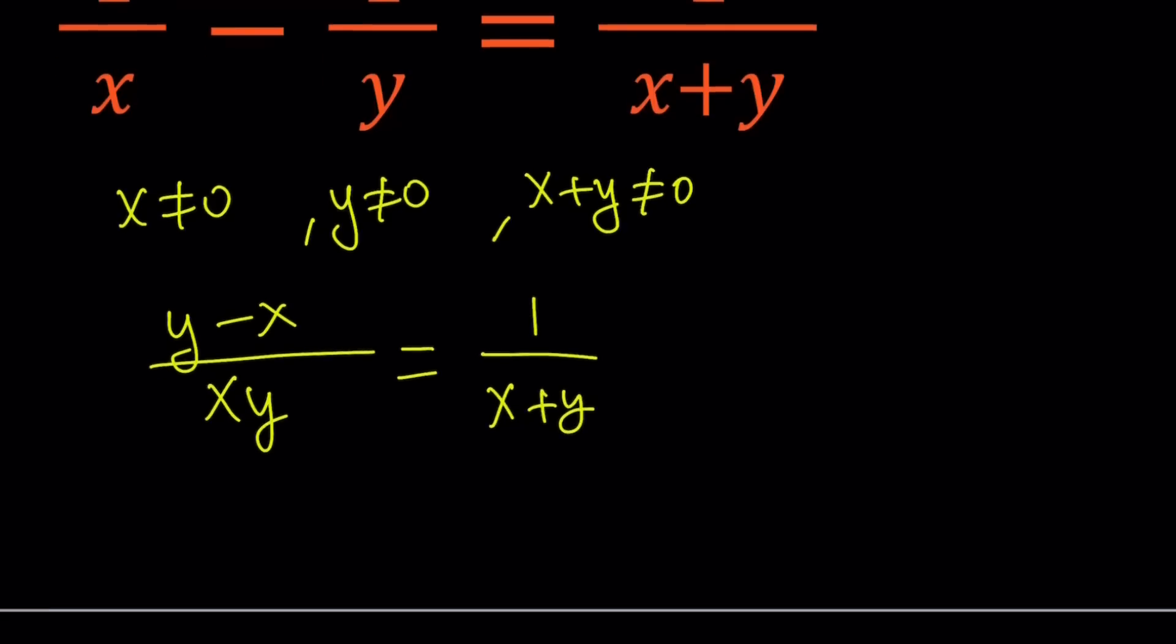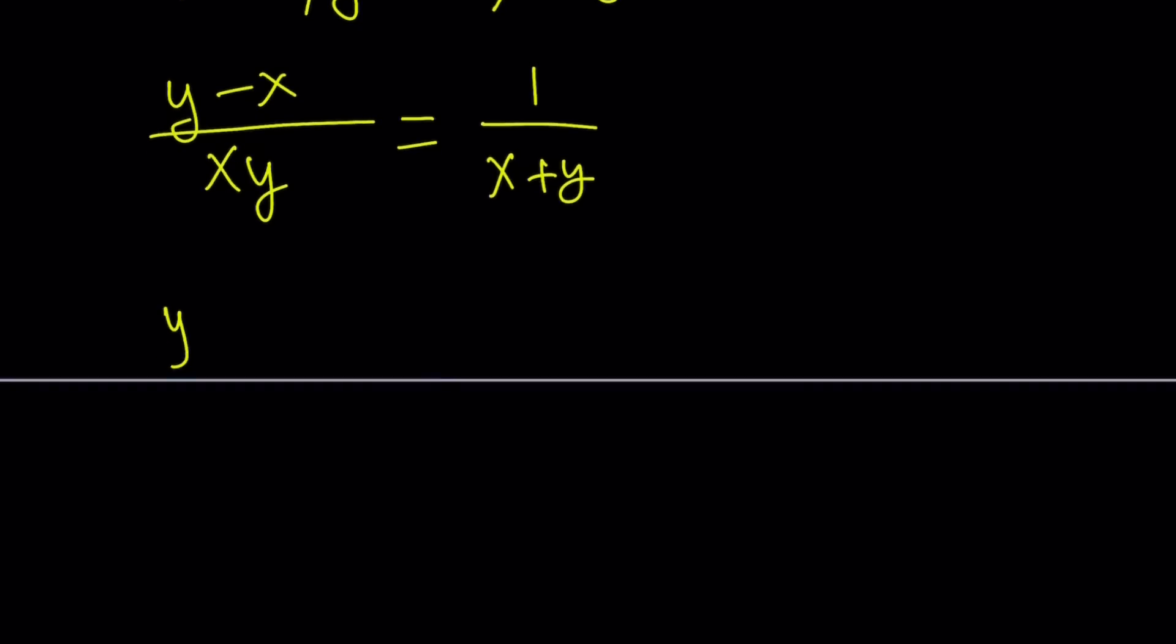Now let's go ahead and cross multiply writing the x plus y as y plus x. So we can take advantage of difference of two squares.